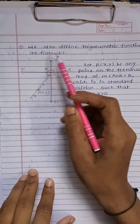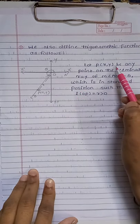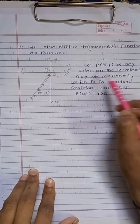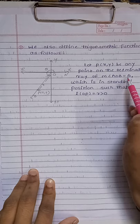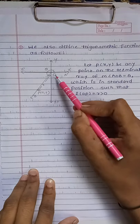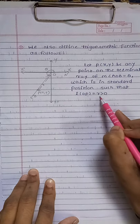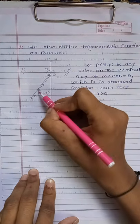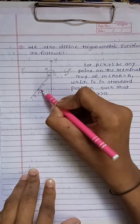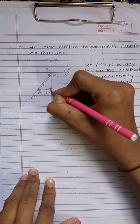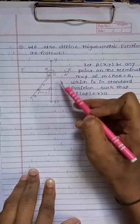In the second part, we also define the trigonometric functions using coordinates. Let P of X, Y be any point on the terminal ray of major angle AOB equal to theta, which is in standard position, such that the length OP equals R, which is always greater than or equal to 0. Then we draw a line from point P perpendicular to the Y-axis to get a right angle triangle. Now, we calculate the trigonometric functions using this quadrant.